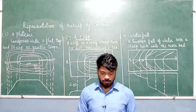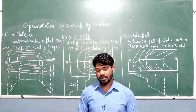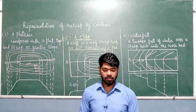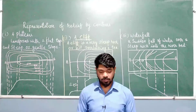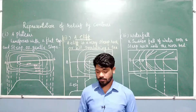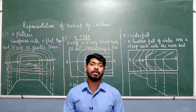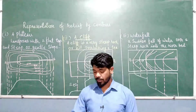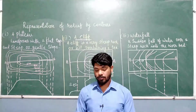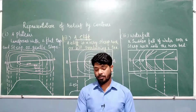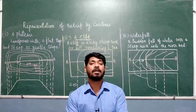So those were the relief features discussed today. There are two more relief features to discuss — pass, saddle, col, and gap — four features, but they have similarities with only the names being slightly different. Definitions you need to learn, and in the next video we shall discuss those. Hope you understood today's relief features shown with the help of contour lines on the topographical map. Any doubts or queries, please do ask.